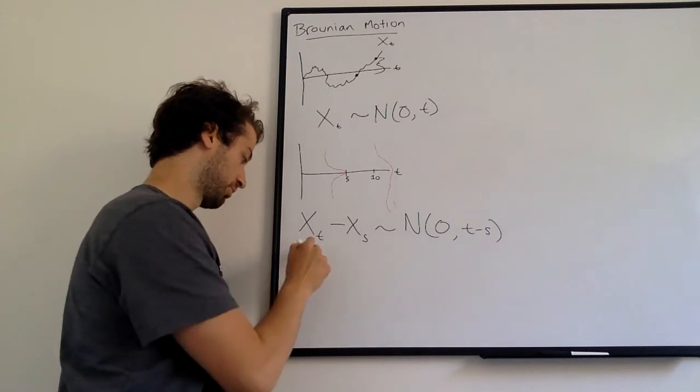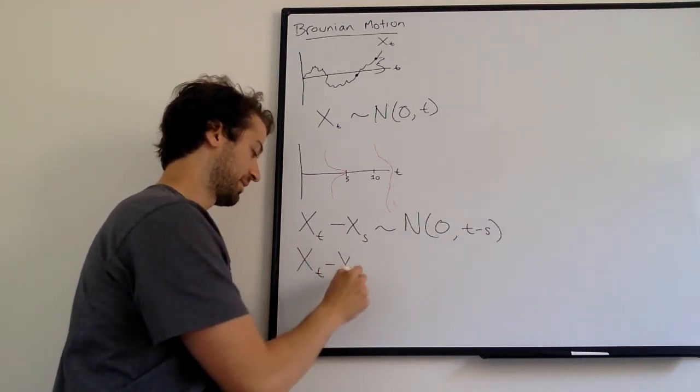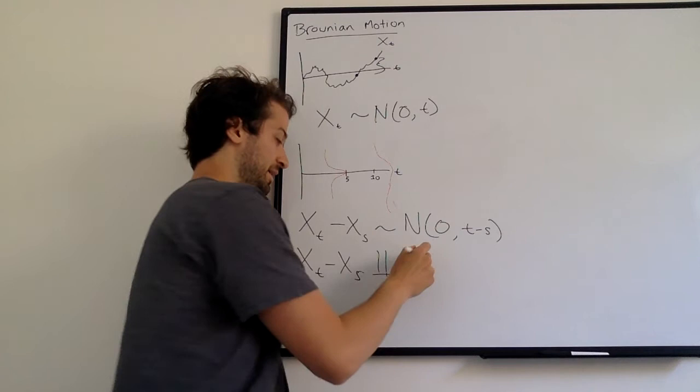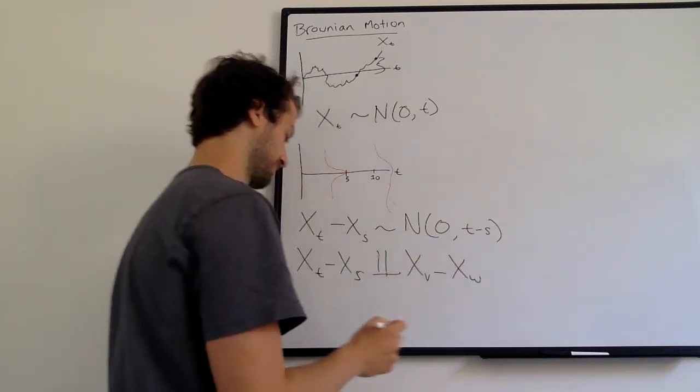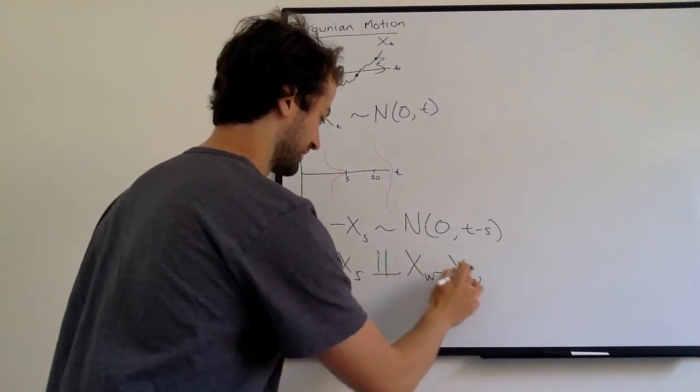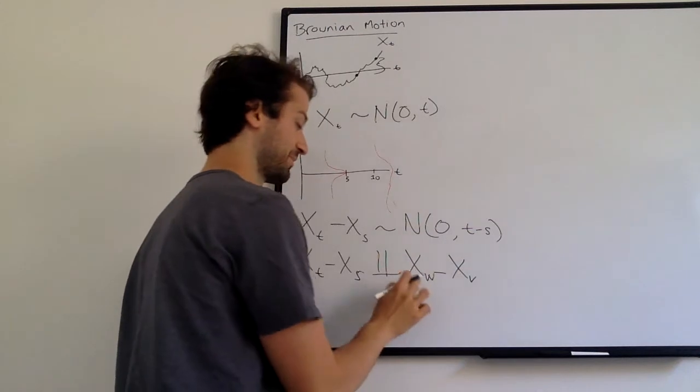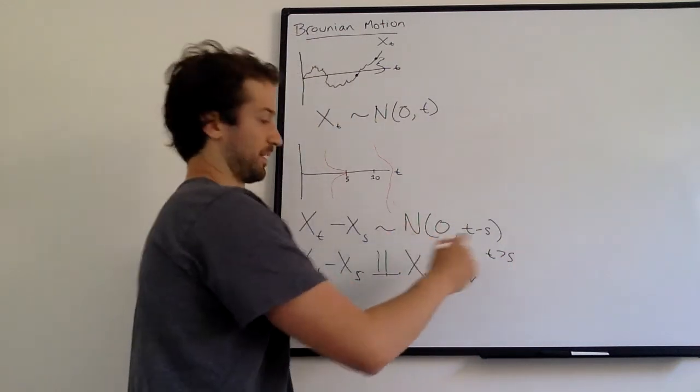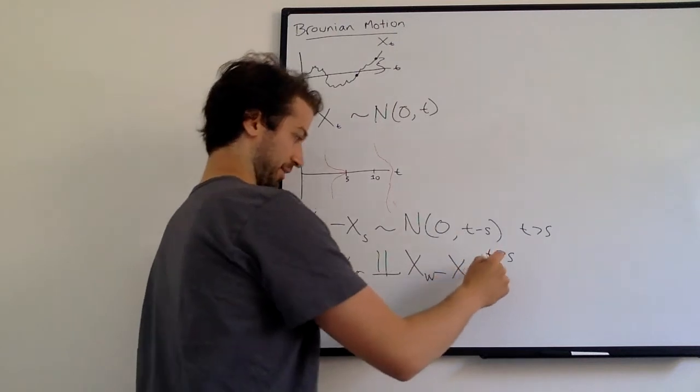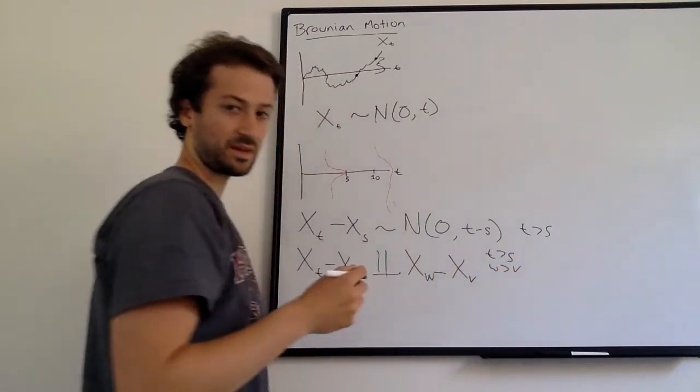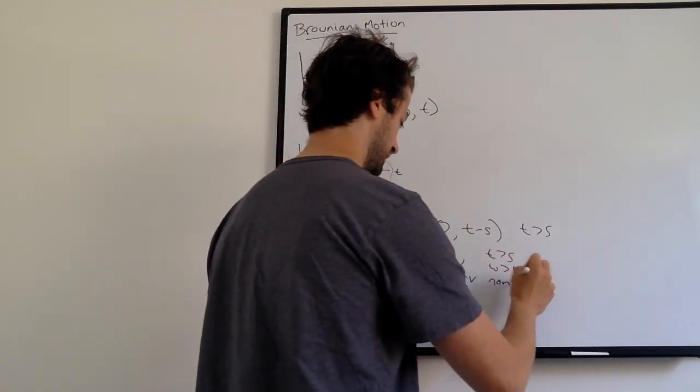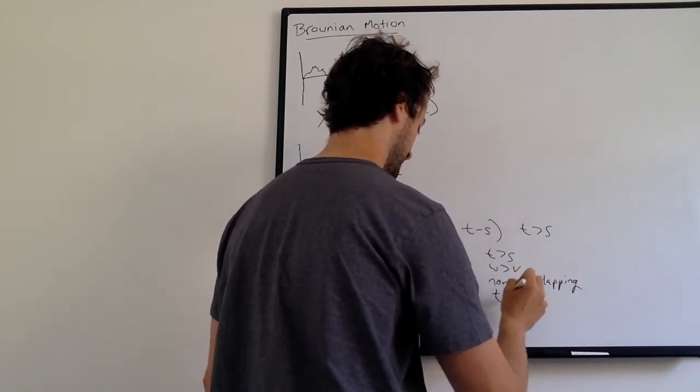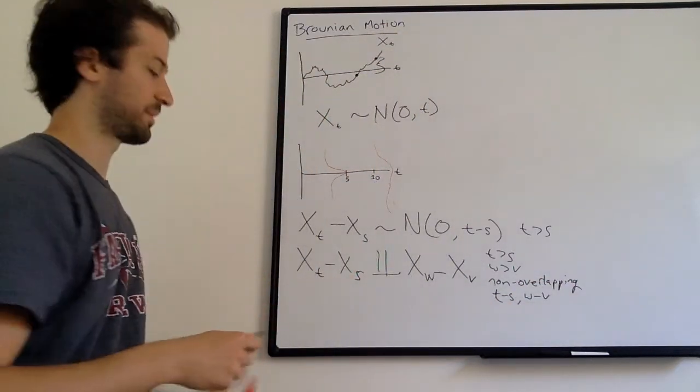And finally, the other cool property is that this increment x sub t minus x sub s is independent. This is the sign I'm going to use for independent. It's independent of x sub w minus x sub v. And this is for t greater than s. I didn't clarify above. This is also for t greater than s, so we don't have negative variance. This is for w greater than v. And this is for non-overlapping t equals t minus s and w minus v.